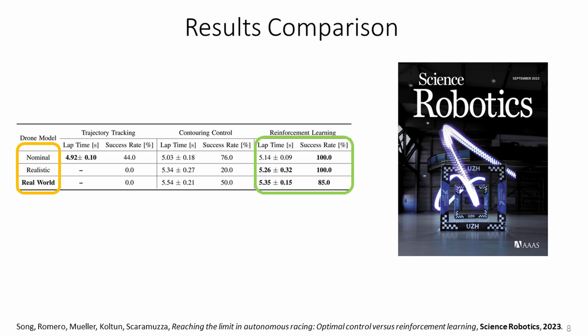In an extensive study we compare the performance of these approaches in three different environments: a nominal simulator, a realistic simulator, and in the real world. The study shows that reinforcement learning is able to outperform optimal control in terms of lap time and robustness, both in simulation and in the real world.